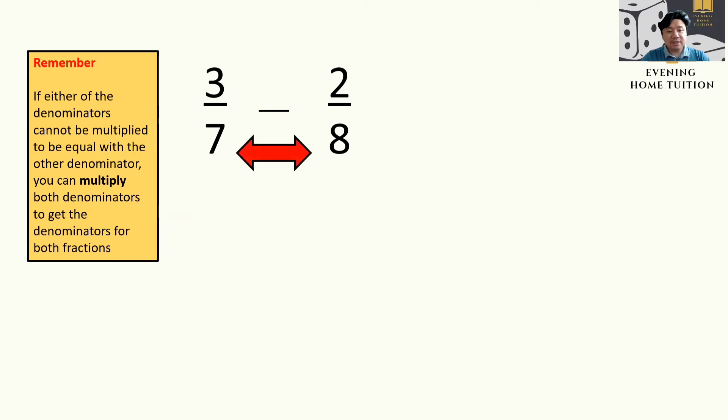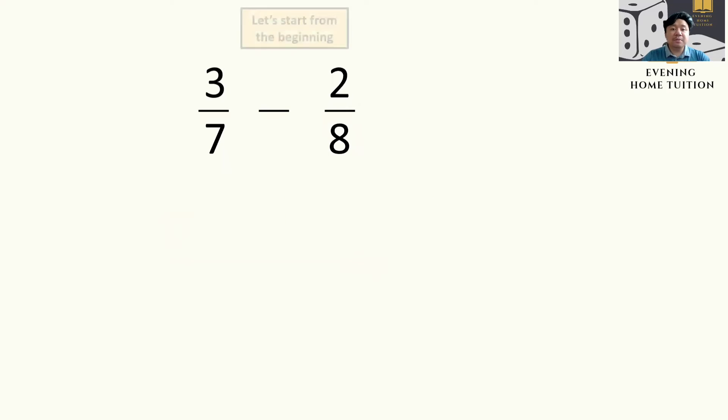So here, you can multiply 7 and 8. 7 times 8 will make 56, and 8 times 7 will make 56. Now let's start from the beginning.